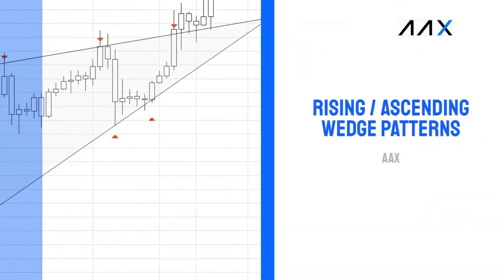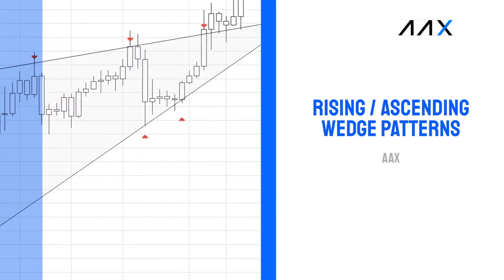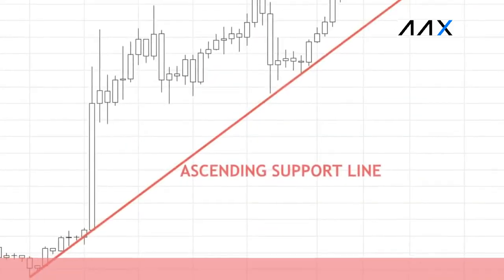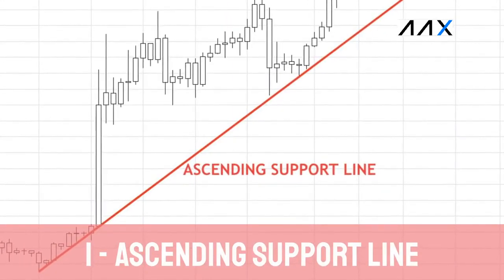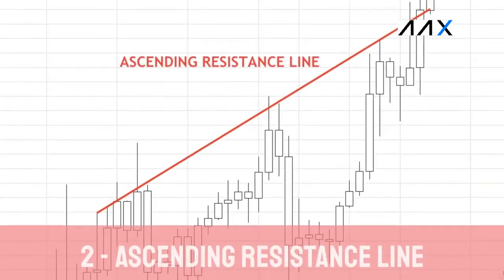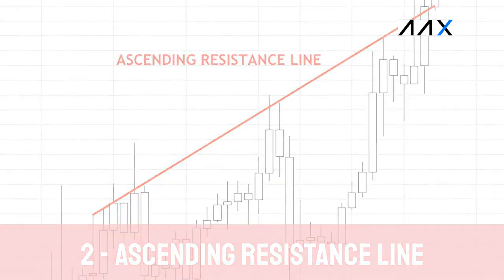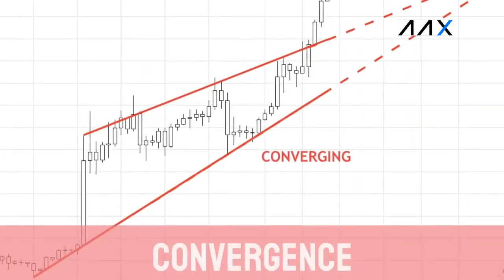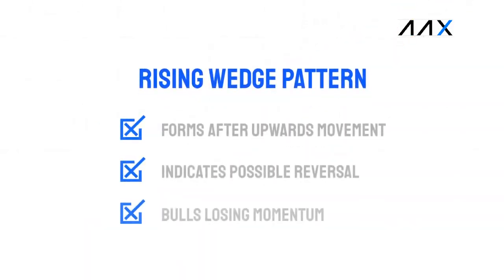The first wedge pattern we are going to look at is the rising wedge pattern. The rising wedge pattern consists of two things: the ascending support line and the upwards resistance line. These two lines will converge to make the rising wedge pattern. A rising wedge pattern usually forms after a period of upwards movement and usually indicates that a reversal is near, showing that the bullish momentum is losing its strength.